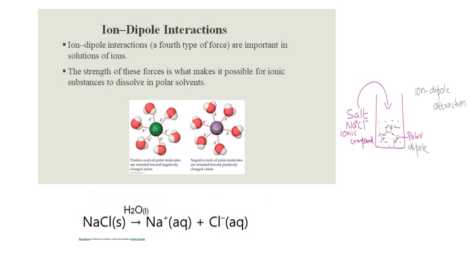The fourth type of intermolecular attraction is ion-dipole interaction. When you dissolve an ionic compound such as sodium chloride, it forms two ions: sodium ions and chloride ions. Water has dipoles — oxygen has a slight negative charge and hydrogen has a slight positive charge. The positive part of the water molecule orients toward the negative ion of sodium chloride, and the negative part of the water molecule orients toward the positive part of the ionic compound. That is how ionic solids dissolve in water — we call this ion-dipole interaction.